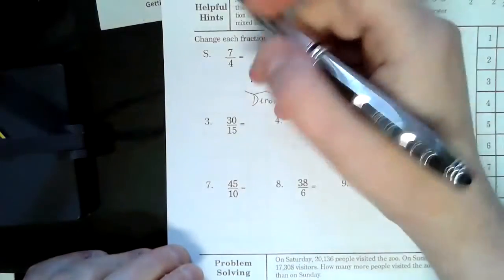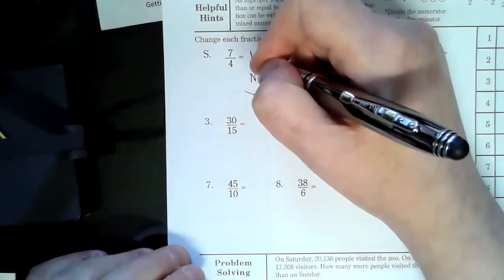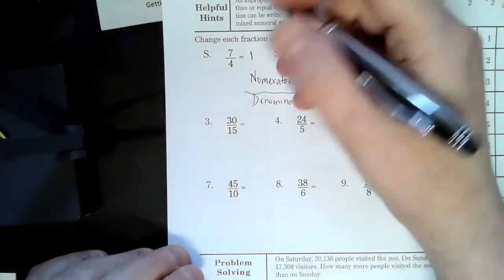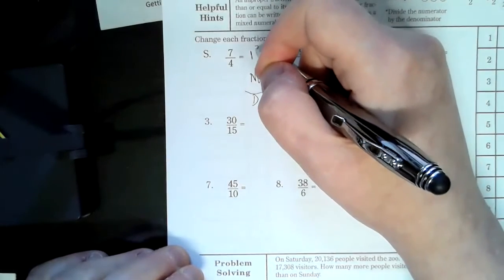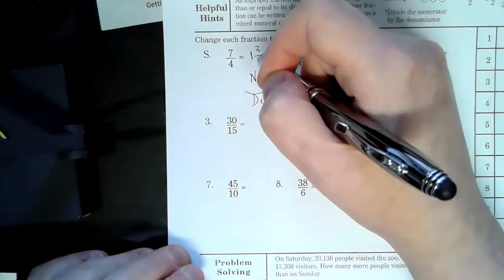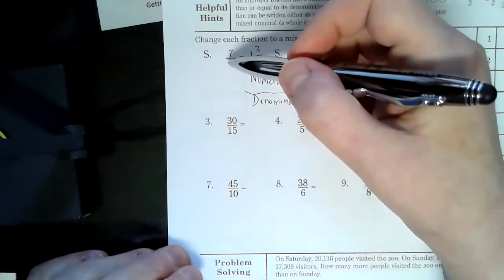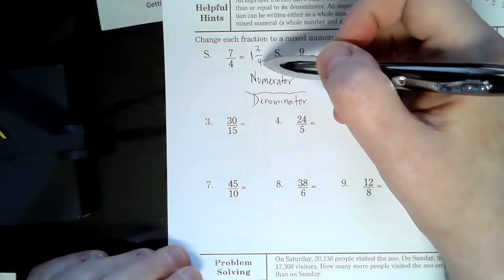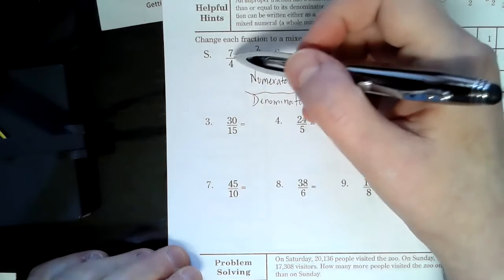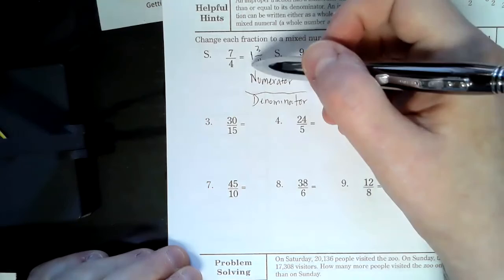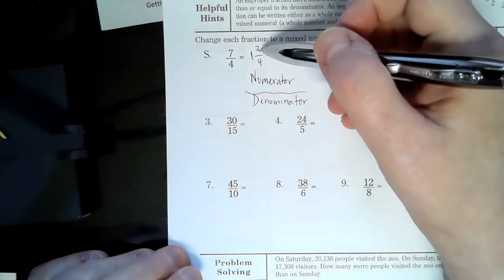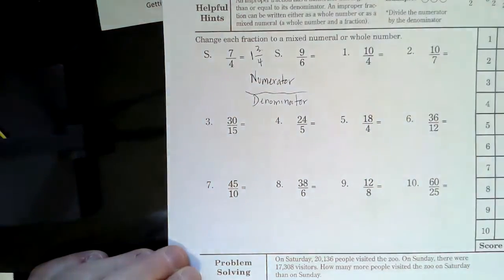So, seven divided by four, four goes into seven one time, and that's a remainder of three over four. So we just drag the denominator over. So the whole number, four goes into seven one time, the remainder is three, and then pull the denominator over.